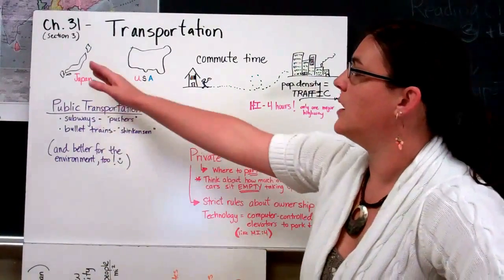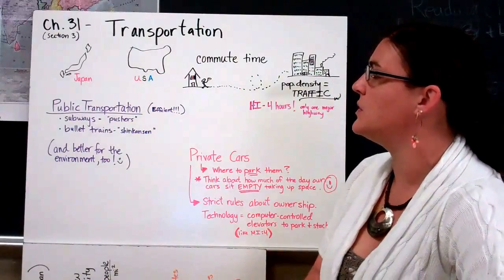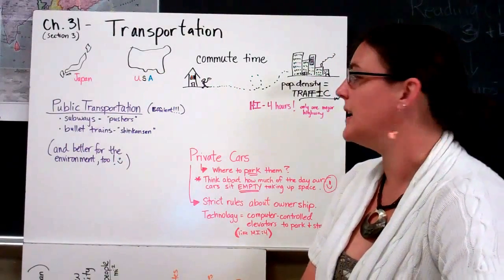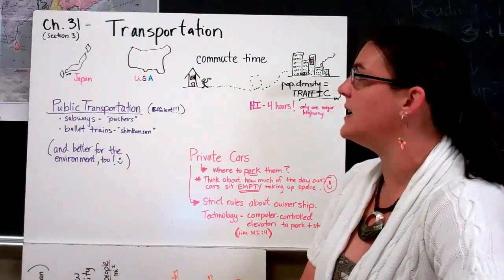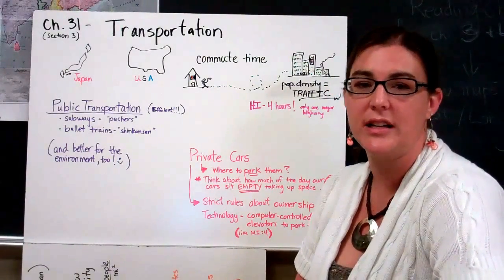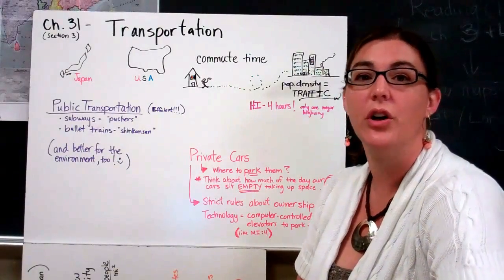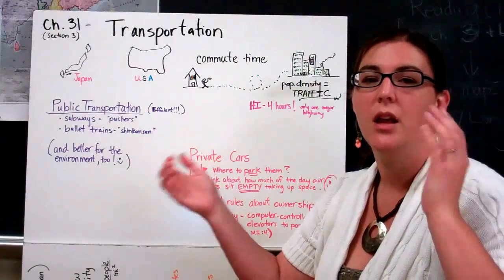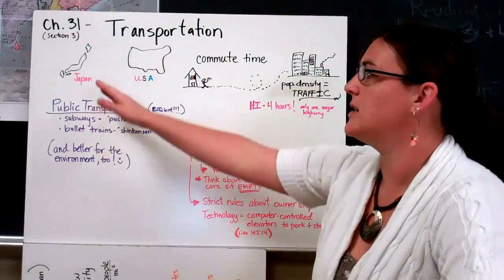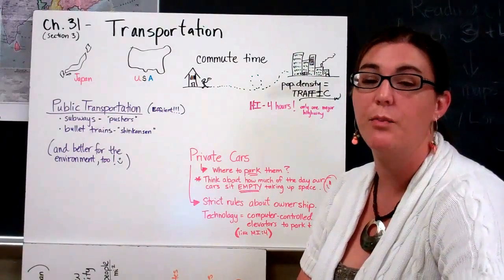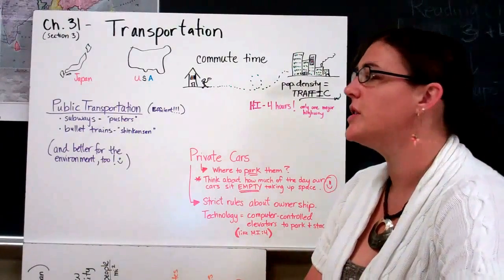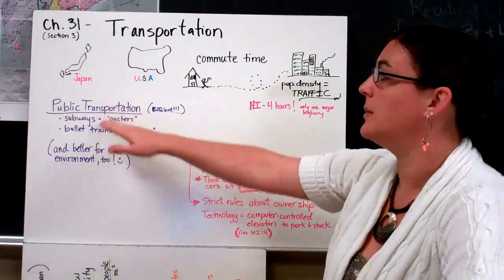We have the small island of Japan as opposed to the large nation of the United States, and that's going to create differences in our transportation. If you think about what people drive in the United States, we have a lot of our own personal cars and those cars are big. We have SUVs, we have minivans. And whereas in Japan you're going to see a lot of bicycles, mopeds, small cars, and a lot of public transportation.